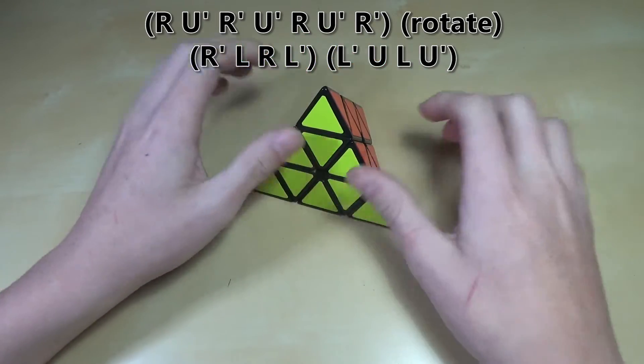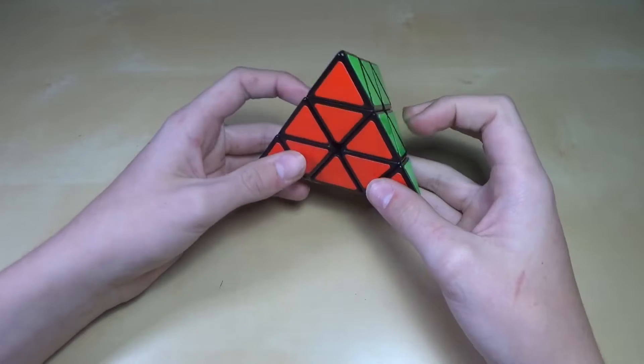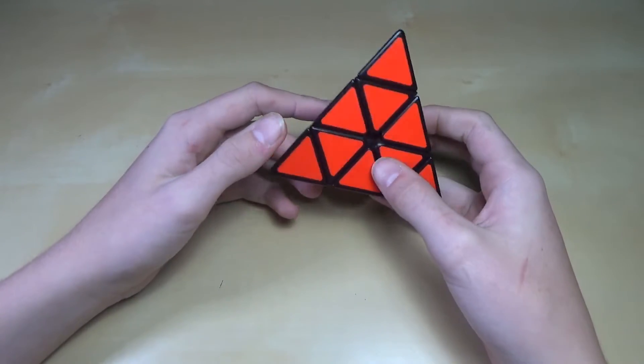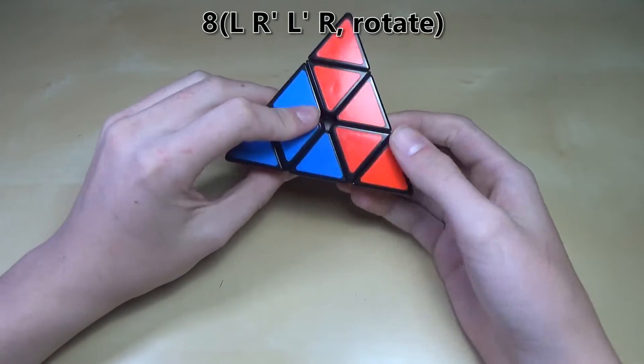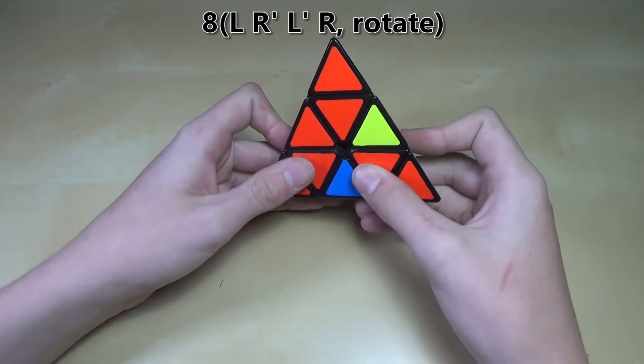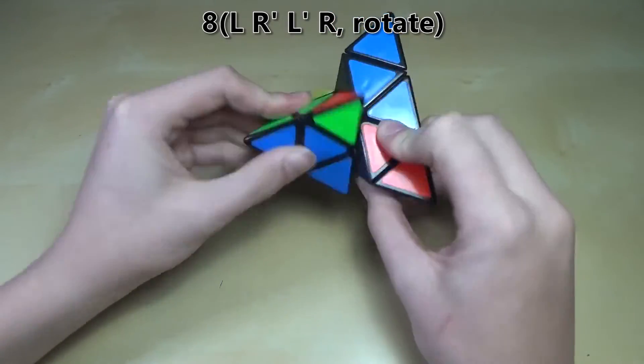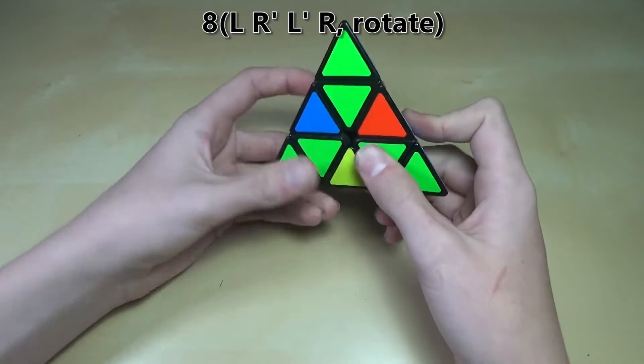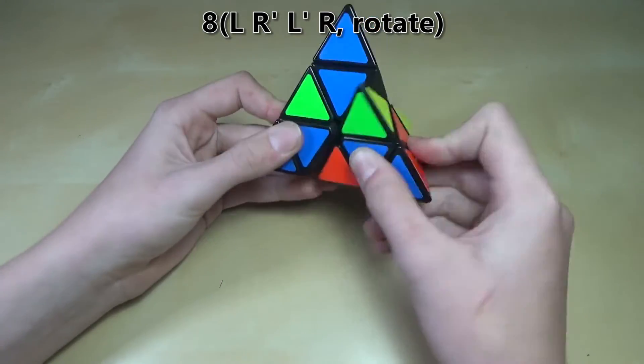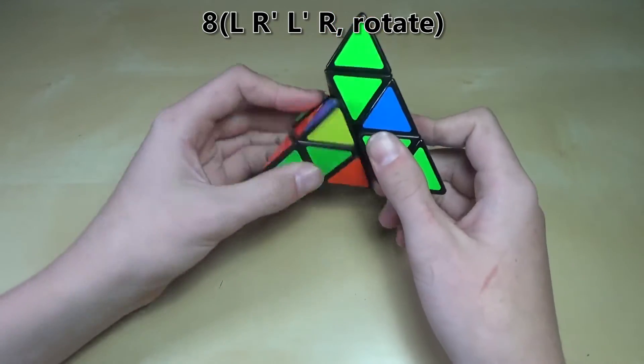A simpler alternate way to do it is to just do this algorithm 8 times. So start with L, R', L', R. And then do a cube rotation, and do that 8 times. It's pretty much just repeating the same thing, so it's actually a lot simpler to remember.